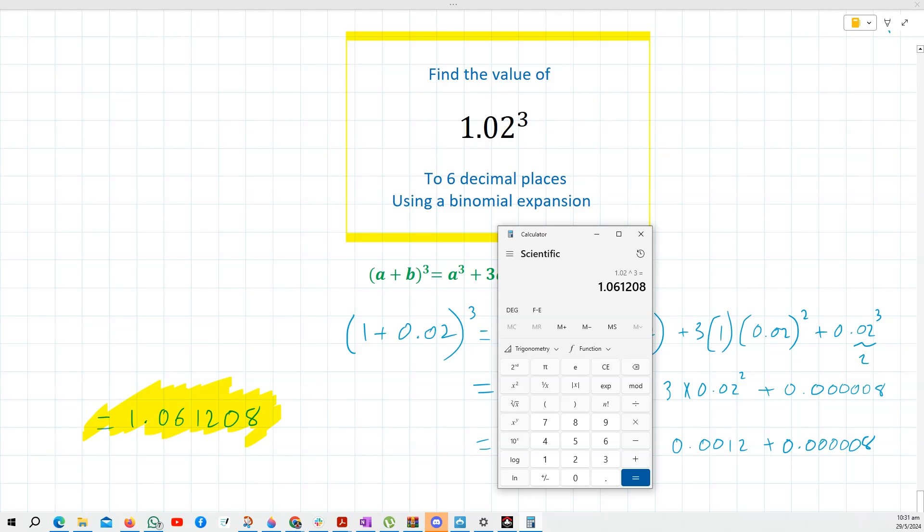This just shows you how incredibly powerful binomial expansion really is and how you can do incredible operations with mathematics and with binomial expansions without the use of a calculator to get your results like this relatively easily with a result to six decimal points, which is absolutely amazing.